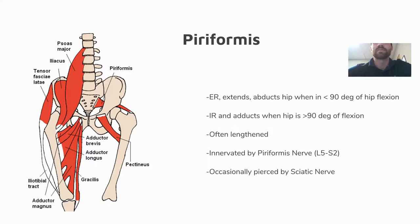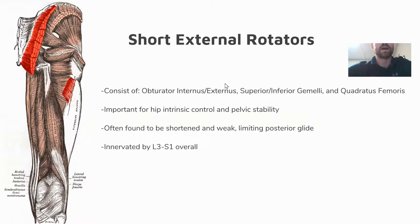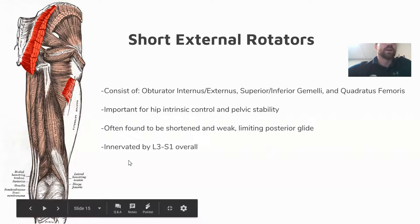Often forgotten muscles of the hip are the short external rotators: the obturator internus and externus, superior and inferior gemelli, and the quadratus femoris. These muscles are important for hip intrinsic control and pelvic stability — they are the rotator cuff of the hip. They are often found short and weak, and can limit posterior glide which impacts hip flexion mobility. Self-mobilization to improve posterior and hip flexion mobility will be covered later in the course. They are innervated by L3 through S1.